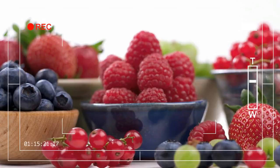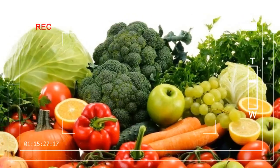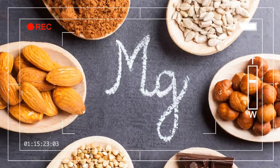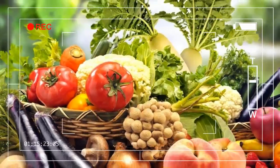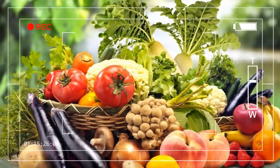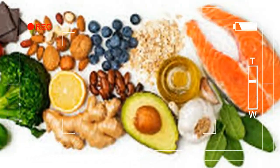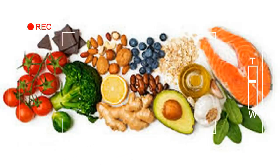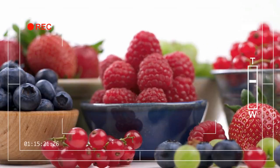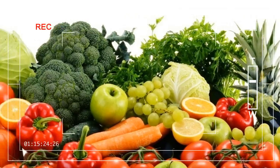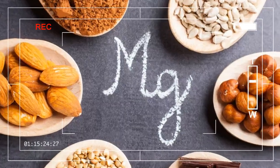Blueberries contain a sort of flavonoid called anthocyanin, which has cancer prevention agent properties that can help boost a man's insusceptible framework. A recent report noticed that flavonoids assume a basic part in the respiratory tracks resistant guard framework. Analysts found that individuals who ate sustenances wealthy in flavonoids were more averse to get an upper respiratory tract disease or normal cold than the individuals who did not.